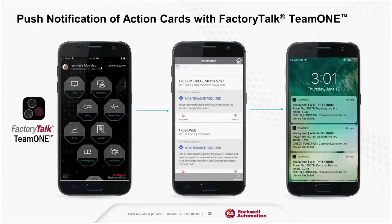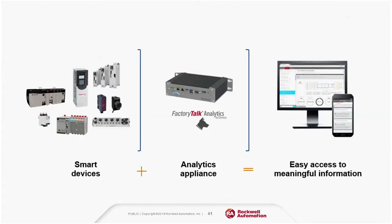This allows information from your Shelby appliance — like those action cards or a drive fault — to pop up as alerts on your phone via the Team One mobile application. To wrap up Factory Talk Analytics for Devices: if you have Ethernet IP networks with connected devices, a Shelby appliance can immediately provide analytical value and real-time access to descriptive and diagnostic information. Shelby is a subscription — in the first year you purchase the appliance and the first year's subscription fee; after that you only pay to continue the subscription portion. It can be purchased from the Rockwell Automation e-commerce portal.